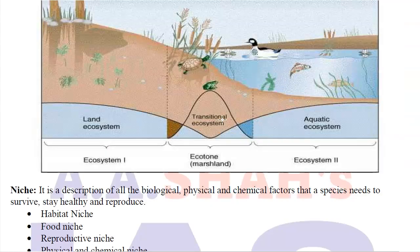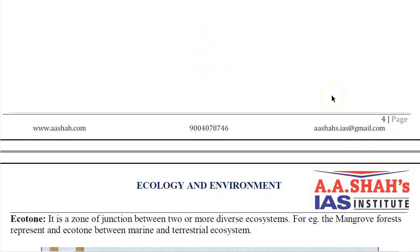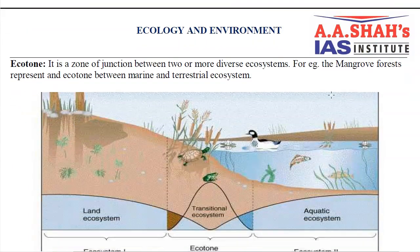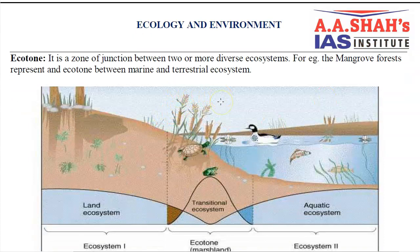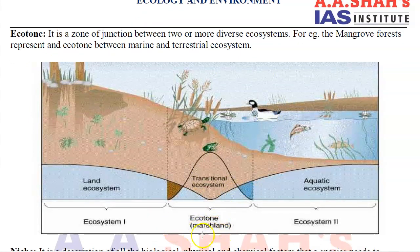Then there is a very important term called ecotone. Ecotone means a zone of junction between two or more diverse ecosystems. For example, where you have a land ecosystem and an aquatic ecosystem, there is a transitional ecosystem in between - like mangrove forests, which grow at the ecotone between marine and terrestrial ecosystems. That transitional zone is called an ecotone.